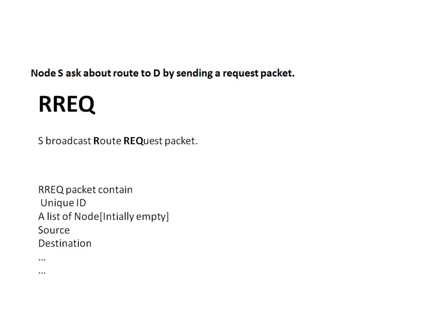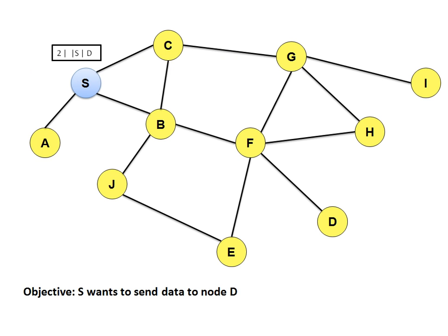S is already connected to A, B, and C. S will ask its neighbors about node D by creating a Route Request packet (RREQ). The contents of this packet are: a unique ID (to avoid duplicate packet reception — if a node receives multiple copies of the same packet, it can discard them), a list of intermediate nodes the packet has passed through, the source address, and the destination address. Node S broadcasts this packet with ID=2, an empty node list, source S, and destination D.